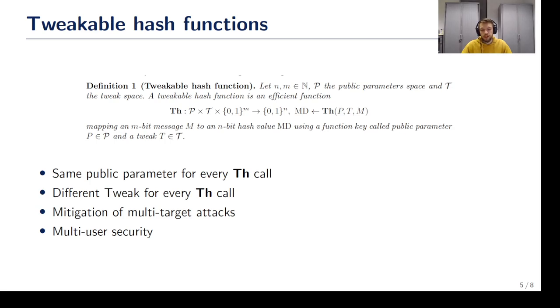We have a lot of hash function calls in Sphinx+. And if we did all of that with one function, finding a preimage for at least one target would be much easier in this case. Having tweaks allows us to separate these calls from each other.